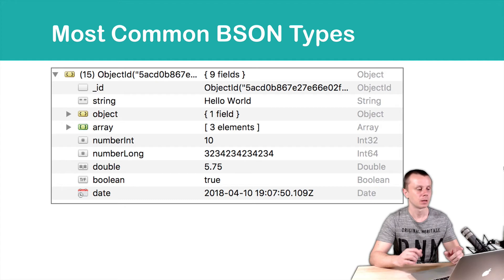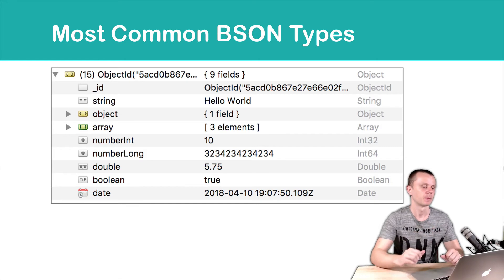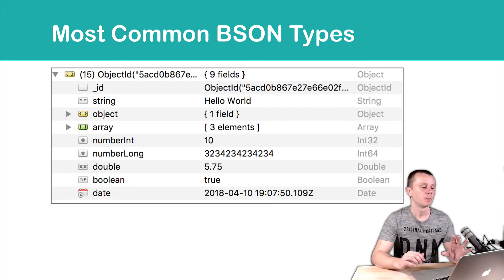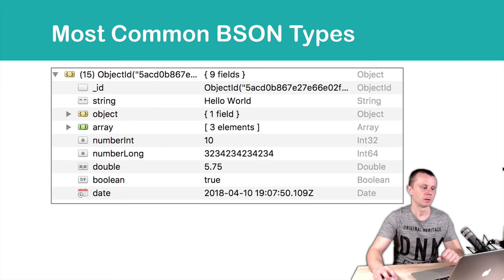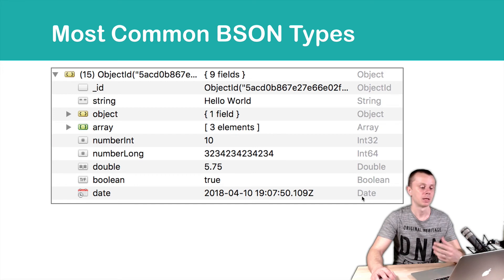This example is a document taken from Robo3t. You may easily see the most commonly used BSON variable types in MongoDB: strings, objects, arrays, integers, long integers, double numbers, booleans, dates, and of course object IDs.